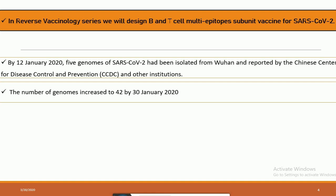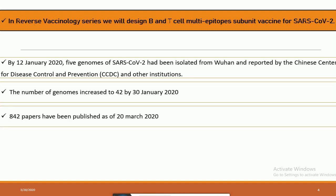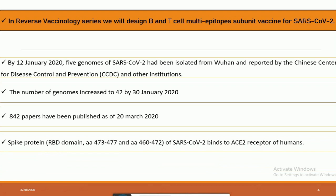As of 12 January 2020, five complete genomes of SARS coronavirus 2 had been sequenced in Wuhan by the Chinese Center for Disease Control and Prevention and other institutions in China. The number of genomes sequenced as of 30th January increased to 42. In the public database we have 842 publications on SARS coronavirus 2 as of 20th January 2020. In this tutorial I will be using the spike protein to design the B and T cell multi-epitope subunit vaccine for SARS coronavirus 2.